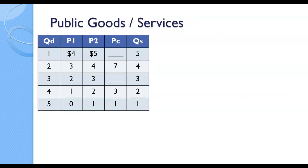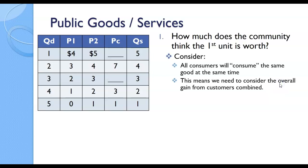Let's assume we're talking about a public park as an example. The question might be: how much does the community think the first unit is worth? Because of non-rivalry, both Person 1 and Person 2 can enjoy the public park together — all consumers will consume this good at the same time. Person 1 thinks it's worth $4, Person 2 thinks it's worth $5. So combined, they think it's worth $9. When the government steps in, they're going to consider it to have a $9 value.